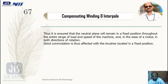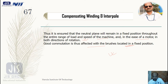This is how it ensures the neutral plane remains fixed, and in case of a motor, in both directions of rotation. Good commutation is thus effected with the brushes located in a fixed position. This is the concept of compensating winding: this winding is placed in the main pole faces and connected in series so that the same armature current flows through it, so that the armature winding produces the exact opposite effect to the armature MMF — because the current flowing through it is in the reverse direction compared to the adjacent armature conductor.